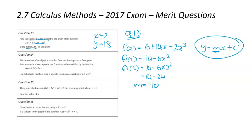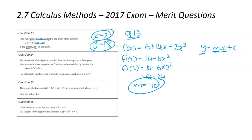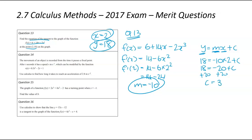We now jump back to y equals mx plus c. We know y is 18, m is negative 10, and x is positive 2 — that leaves c. Substituting: 18 equals negative 10 times 2 plus c, so 18 equals negative 20 plus c, which gives c equals 38. Therefore y equals negative 10x plus 38, and that's the equation of the tangent.